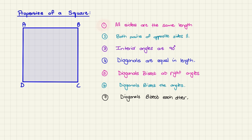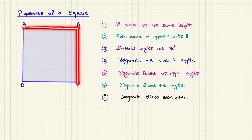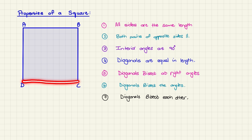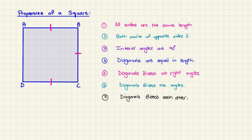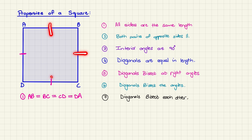Our first property is that all sides are the same length. So line AB is equal to BC, equal to CD, equal to DA, and we indicate equal length with a little line through those sides. We can write it as AB = BC = CD = DA, so all four sides are equal in length.